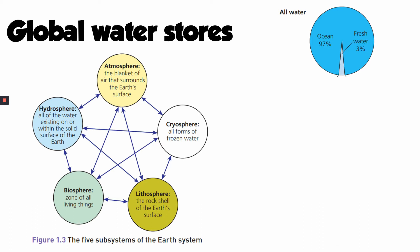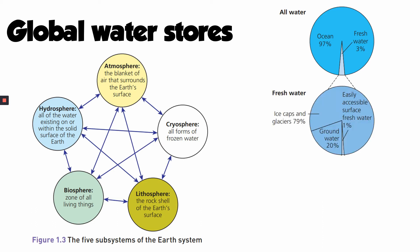When we break that fresh water down and think about how it's stored, actually a lot of it isn't accessible or easily available at the surface in the form of rivers and lakes. In fact, 99% of that fresh water is locked away — either in ice caps and glaciers, which account for 79%, or in groundwater, the deep stores of water beneath our feet. Only 1% of 3% of all the water on the planet is easily available to us as surface fresh water.